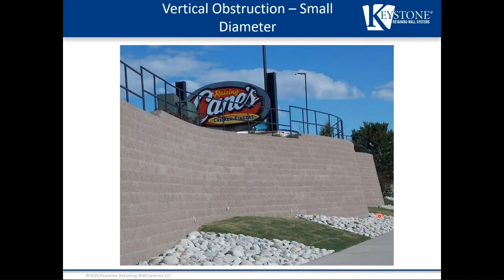Signs are another thing designers don't often see — what does the signage look like and what is its foundation? Electrical boxes also need consideration — power and conduit lines are probably running in the reinforced zone. A good example shows a sign post, electrical, and some type of pedestrian guide rail or handrail at the top — all things to consider.